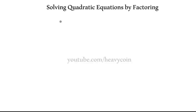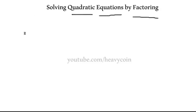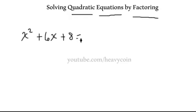In this lesson we're going to be talking about solving quadratic equations by factoring. First we need to understand what quadratic means. A quadratic is a polynomial that has degree 2. Here's an example: x squared plus 6x plus 8. To make it an equation, we throw in an equal sign — set it equal to 0.